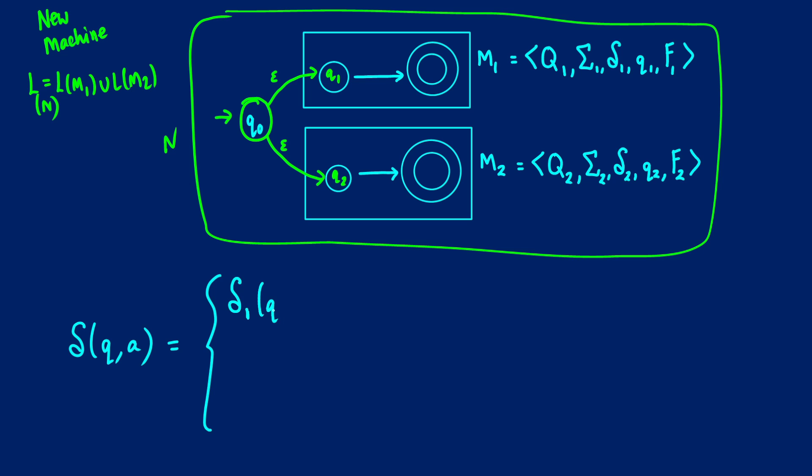We want to use the old transition function on that state and that input if the state, let's say little q, is in Q1. So if this is in machine 1, I'm going to label this as M1. This is our M1 condition. If it's going to be in machine 2, our state, then we want our transition function from machine 2 to work. This satisfies the M2 conditions. So basically at this point, we have our M1 and M2 covered. What we need to do now is figure out our transitions for the beginning.